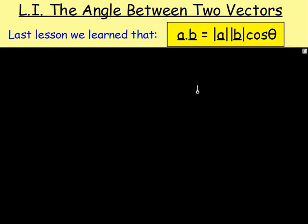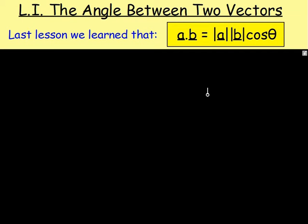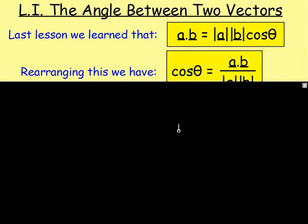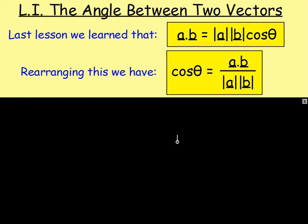In the last lesson we were looking at the scalar product, and one of the formulas for that is a·b equals magnitude of a times the magnitude of b times cos θ. If we rearrange that, we end up with cos θ equals a·b over the magnitude of a times the magnitude of b. And we can use this formula to work out the size of an angle between two vectors.